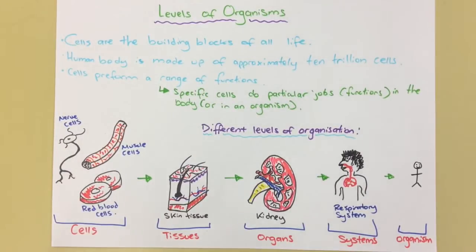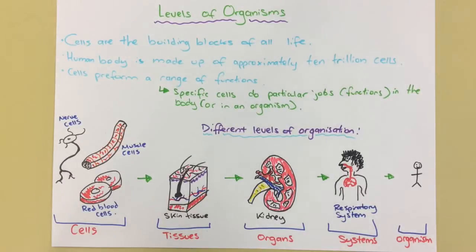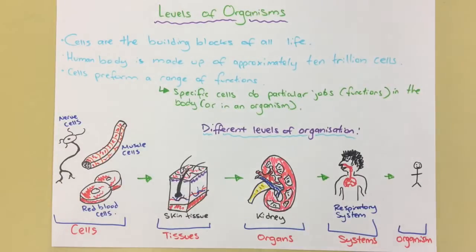Cells are the building blocks of all life. Without those cells, there is no life. The human body is made up of approximately 10 trillion cells. Cells perform a range of functions, so specific cells do particular jobs.